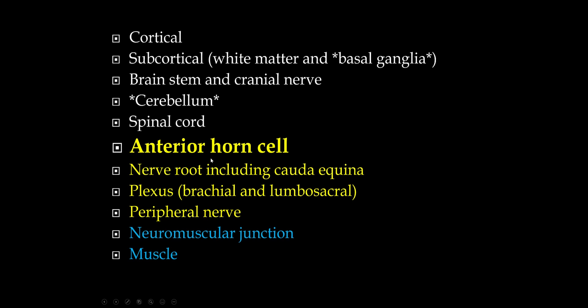The lower motor neurons in the spinal cord are the anterior horn cells. Last time we talked about the projection through the motor nerve root. We also have a sensory nerve root, so radiculopathies, plexopathies, and peripheral nerves. Any problem here gives us lower motor neuron findings: atrophy, fasciculations, flaccid weakness, and so on.